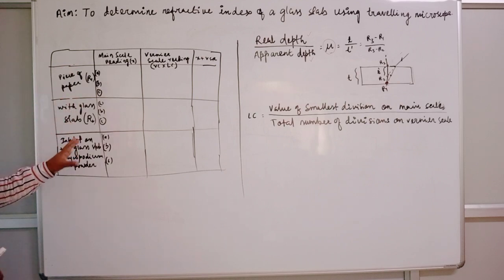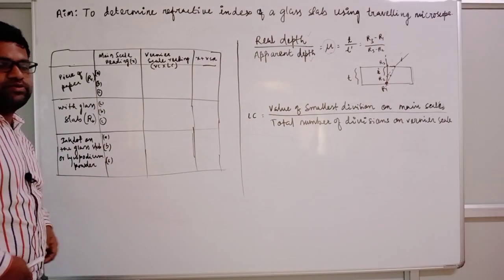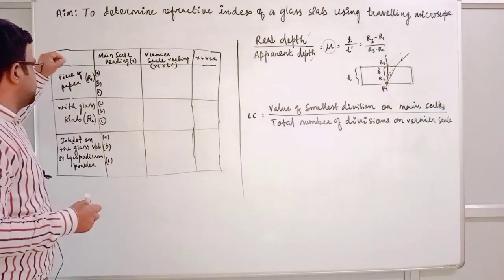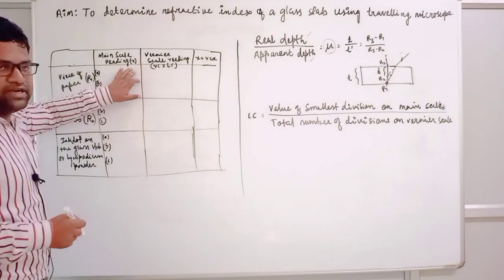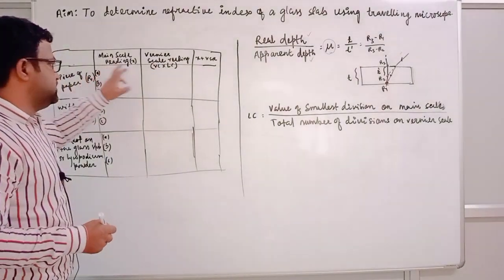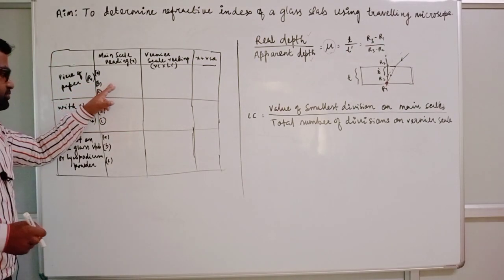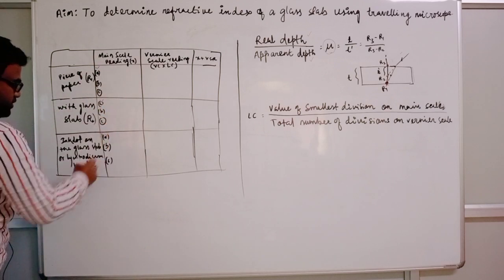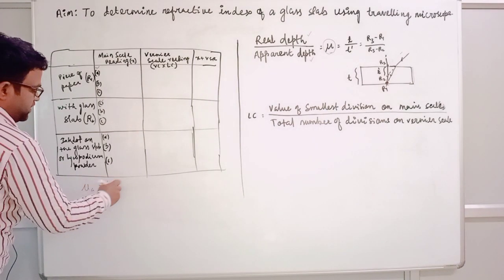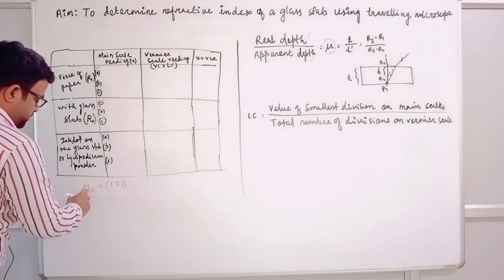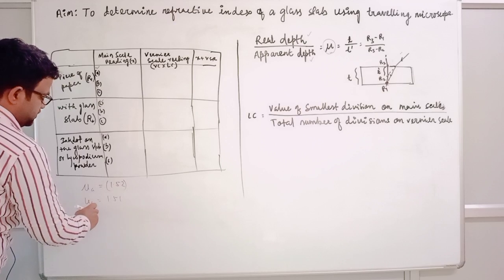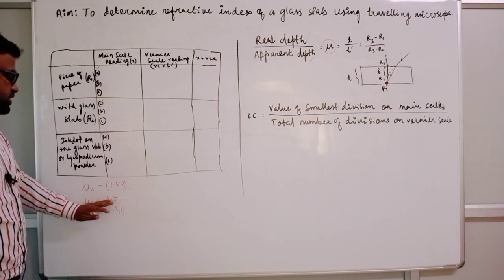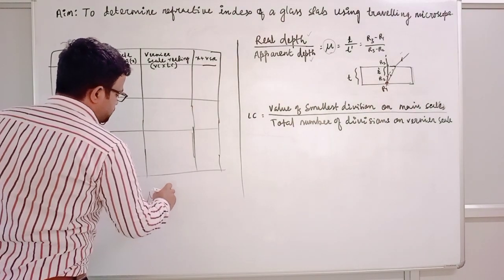You can focus your microscope on that surface dot to get point R3. In the table, you record readings for: the piece of paper without glass slab, the piece of paper with glass slab, and the ink dot on the glass surface. For each point, take three readings — A, B, C. Record the main scale reading and vernier scale reading, add them to get the total reading, and calculate the refractive index for each set. For example, mu-A might be 1.52, mu-B might be 1.51, mu-C might be 1.49.